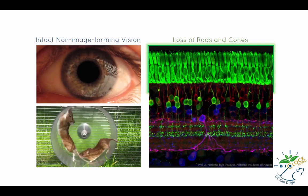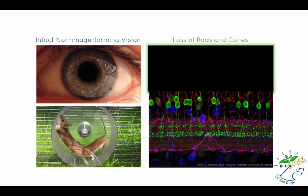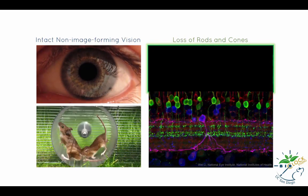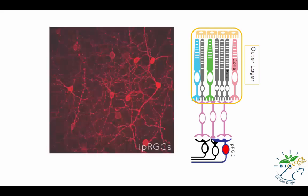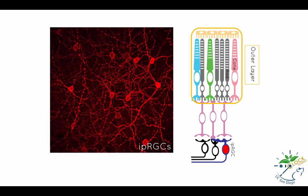However, mammals without rods and cones can still manifest pupillary constriction and photic entrainment. So how can mammals still perform these non-image-forming functions without rods and cones? This is because the third photoreceptor cells, the IPRGCs, which are responsible for non-image-forming functions, are still intact.